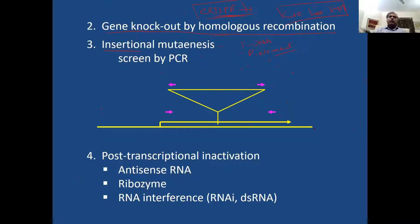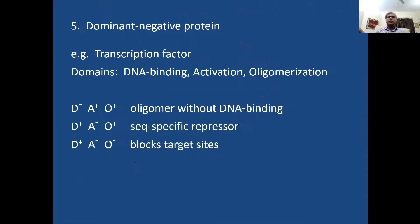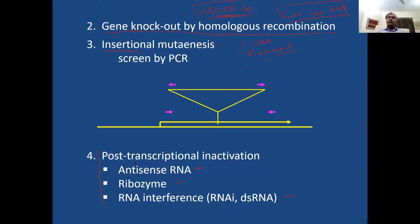When we know genes, we can also inactivate them using antisense RNA, ribozyme, or RNA interference. This post-transcriptional inactivation is a very useful tool, and I would like to spend more time on this because people have designed many reverse genetic screens based on it.